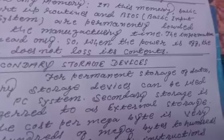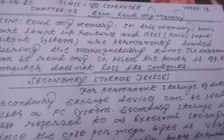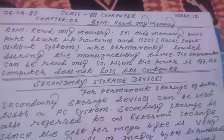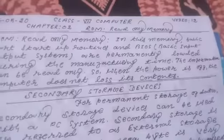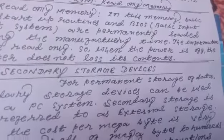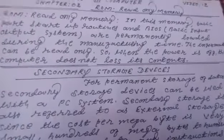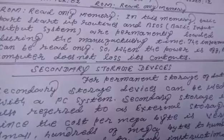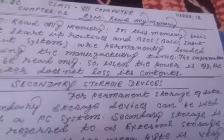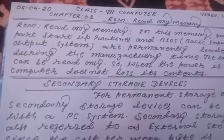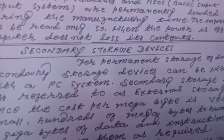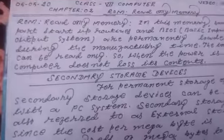The information in ROM can be read only. When the power is off, the computer does not lose its contents, as the data is permanently stored in ROM.